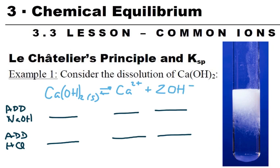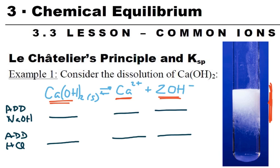We're going to go through lesson 3.3, the common ions and common ion effect. Starting off with the idea about calcium hydroxide — it does not dissolve well. It is on our list of relatively soluble hydroxides, but it doesn't dissolve well. So if you put some calcium ions into some sodium hydroxide, you're going to get a precipitate. Some of it is going to dissolve, and we'll have a significant amount of calcium ions and hydroxide ions.